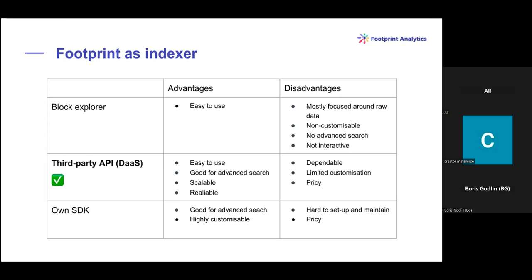The second solution is your own SDK — you've probably heard of The Graph for indexing EVM data. It's very customizable since you and your team control all the logic, and it has very good advanced search capabilities. However, it's hard to set up and maintain, because if you're building on top of a custom SDK, you're the one who has to support it, set it up, and keep it updated. And it can be pricey, as somebody has to develop, migrate, and maintain it.